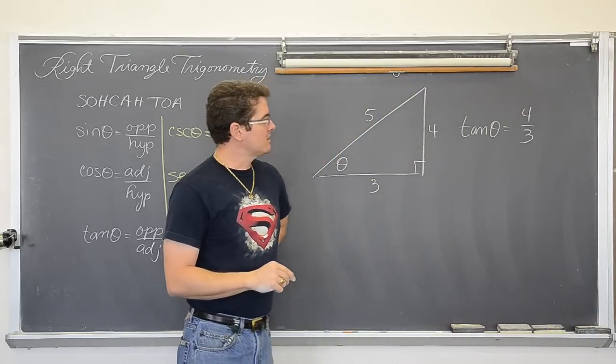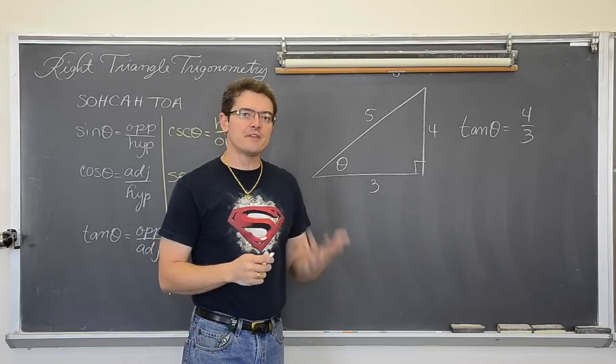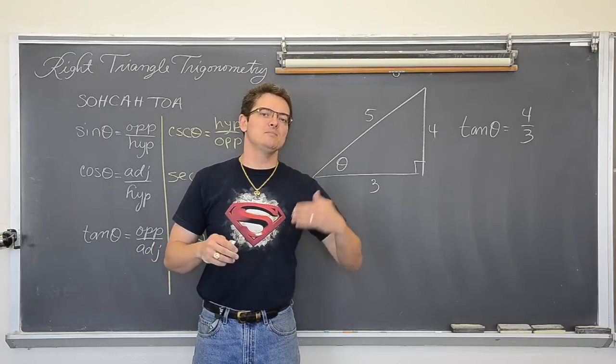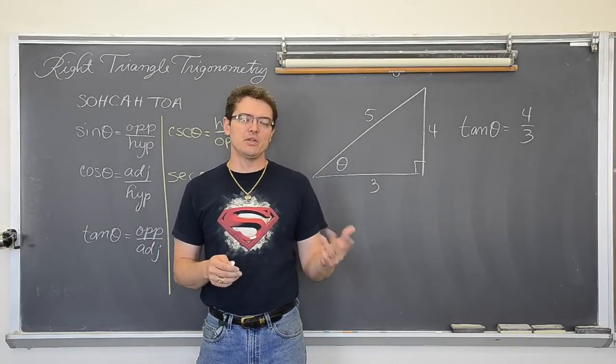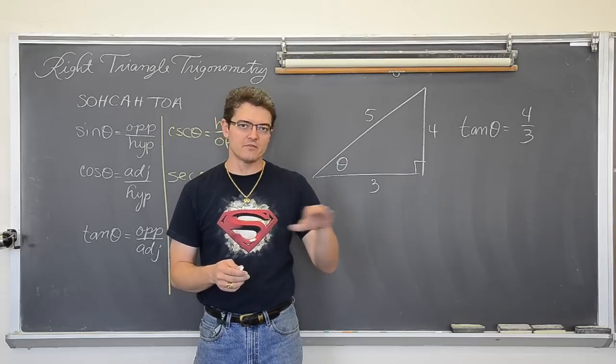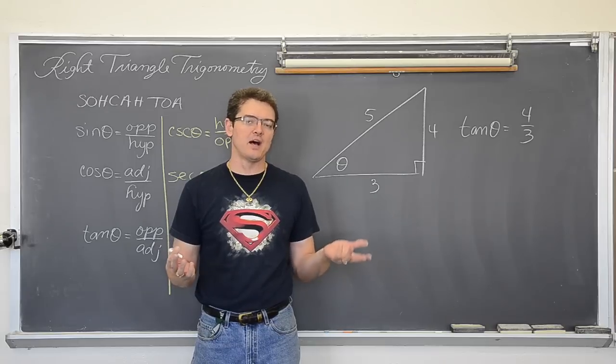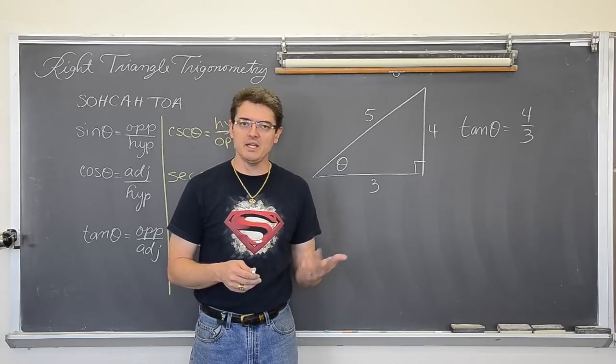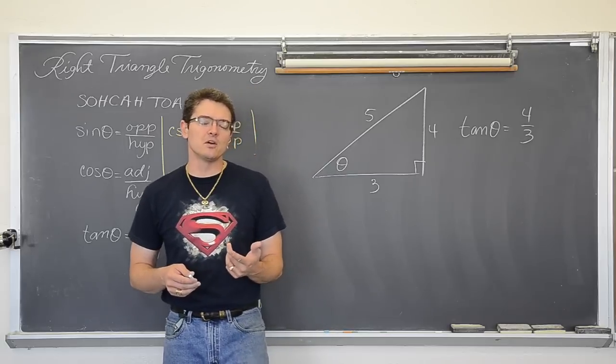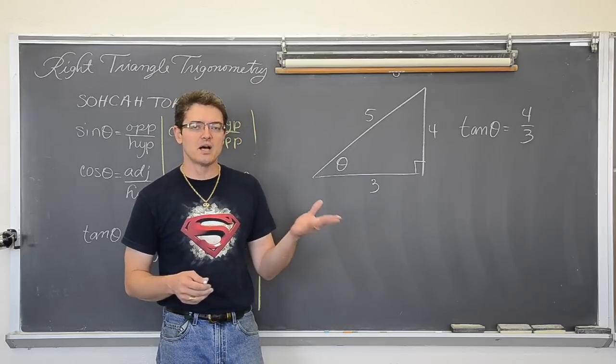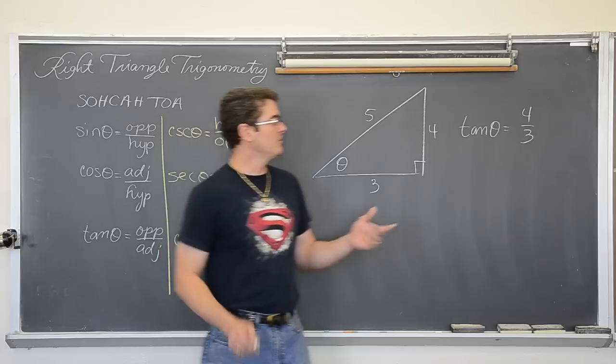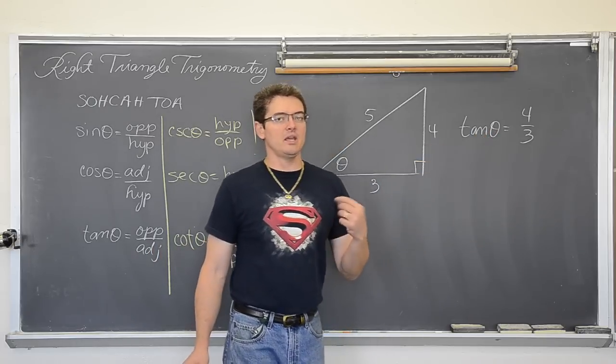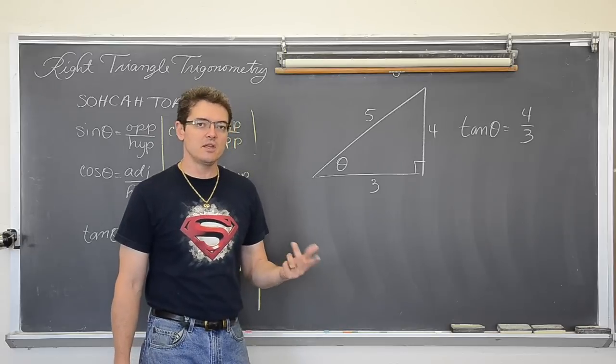Now we need to get that tangent function away from theta. Well, if I said 2 times x equals 10, you would do the inverse of multiplication which is divide both sides by 2 and get x equals 5. If I said you had x squared equals 16, you would do the inverse function of squaring which is square root both sides and say x equals 4 and negative 4. Well, if I want to undo the tangent function I need to apply the inverse tangent to both sides of the equation.